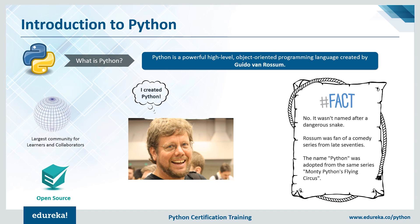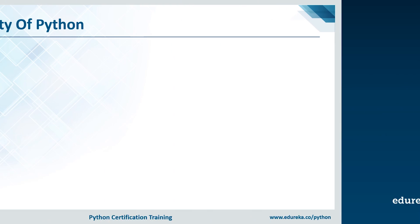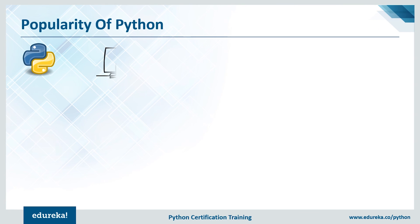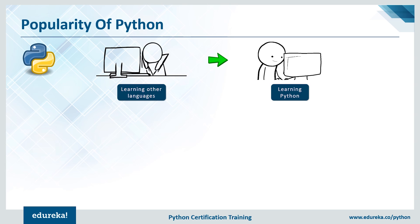So why did he choose to name it Python? Well, not certainly because of the snake — it was actually from a TV series that Rossum used to watch. Now I'm sure you're curious about why Python is so popular. If you recall, a few years ago people said Python was the next big thing. Well, they were right — in today's situation, it is the big thing.